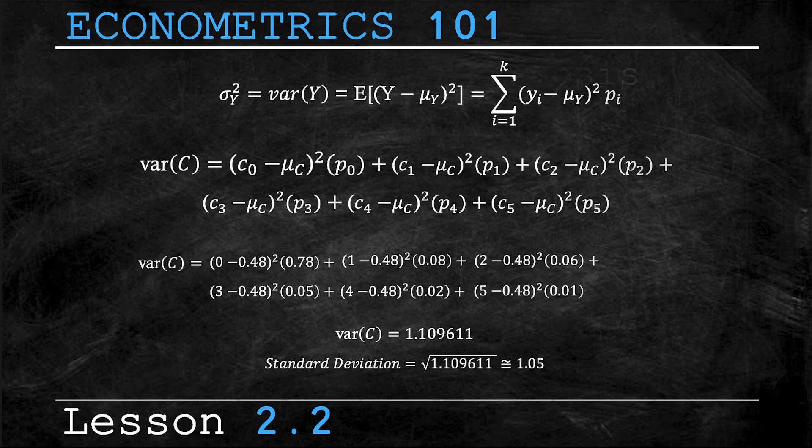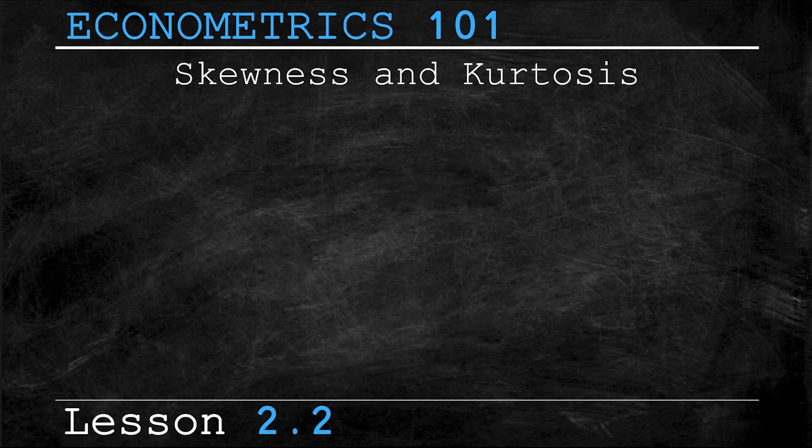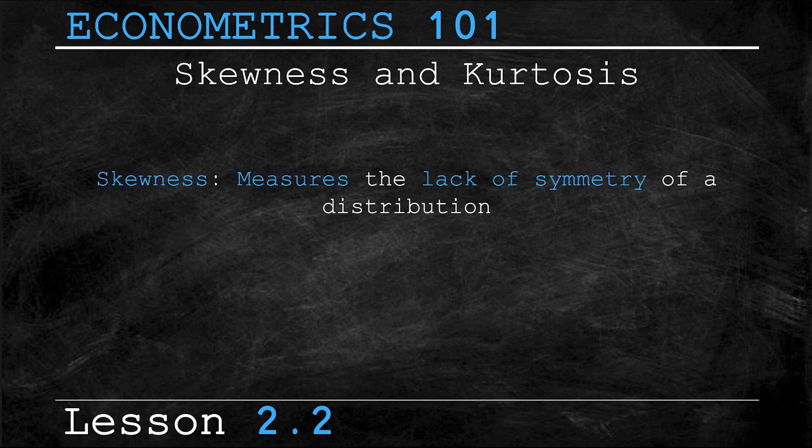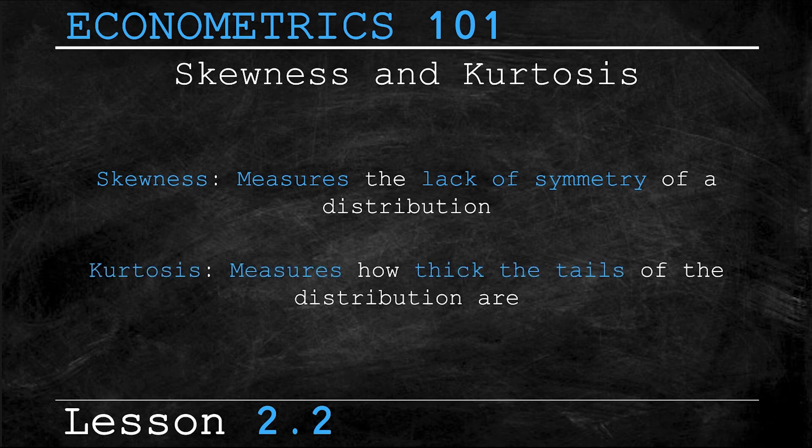Moving ahead, we're going to briefly look at two more measures, which look at the shape of the distribution, and that's skewness and kurtosis. Put simply, skewness measures the lack of symmetry of a distribution. Sometimes a distribution may be skewed more to the left or right of the mean, rather than equally distributed on both sides. Kurtosis, on the other hand, measures how thick the tails of the distribution are.